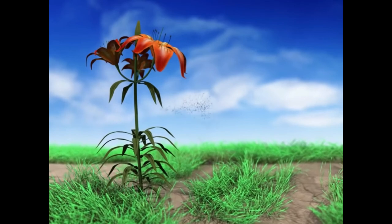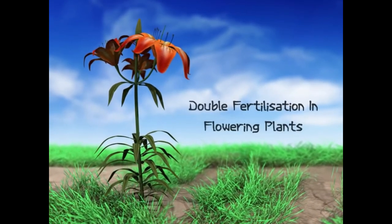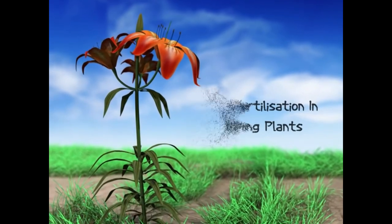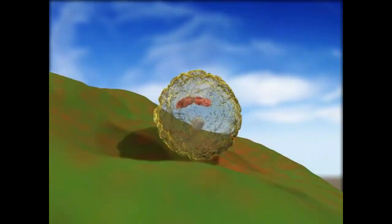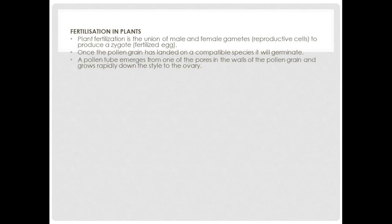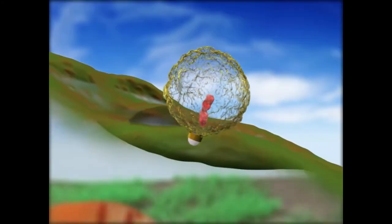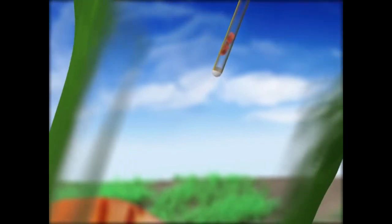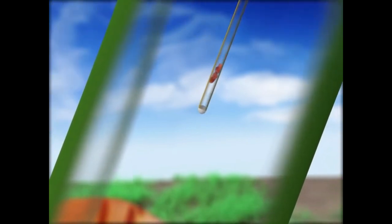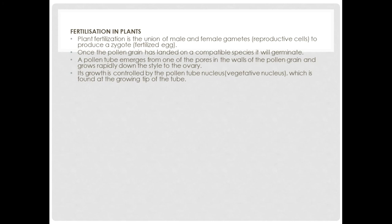Now let's take a look at fertilization in plants. Plant fertilization is the union of a male and female gamete to produce a zygote. Once the pollen grain has landed on a compatible species it will germinate. A pollen tube emerges from one of the pores in the wall of the pollen grain and grows rapidly down the style to the ovary. Its growth is controlled by the pollen tube nucleus, also known as the vegetative nucleus, which is found at the growing tip of the tube.